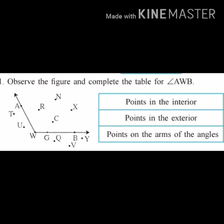The points which are inside the angle are called points in the interior. Points which are outside the angle are called points in the exterior. And points on the angle are called points on the arms of the angles.